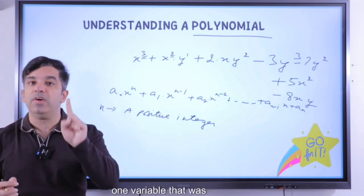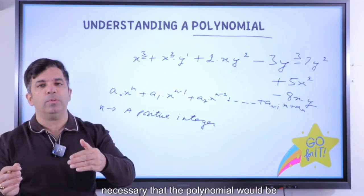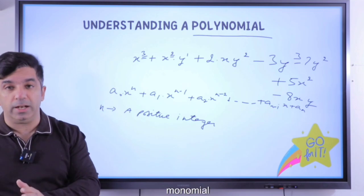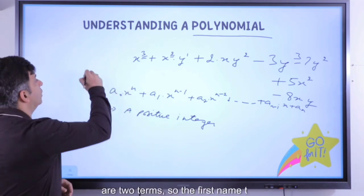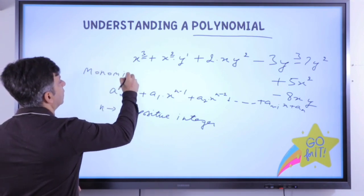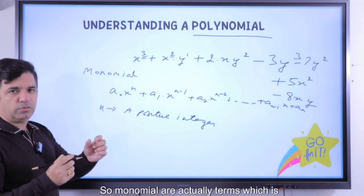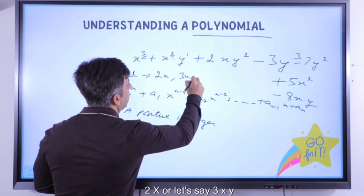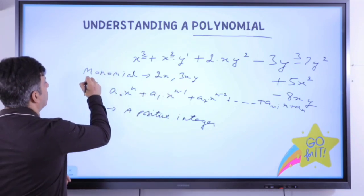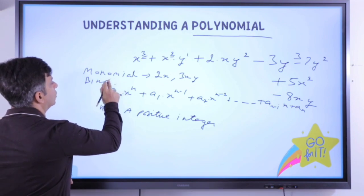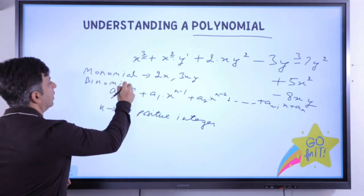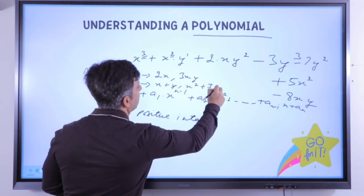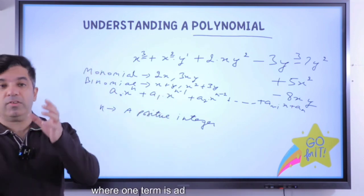That was the example of a polynomial in one variable, x. But a polynomial can have more than one variable as well. If it is a single term, it is a monomial — for example, 2x or 3xy. If there are two terms, it is known as a binomial — for example, x + y or x² + 3y, where one term is adding with another term.